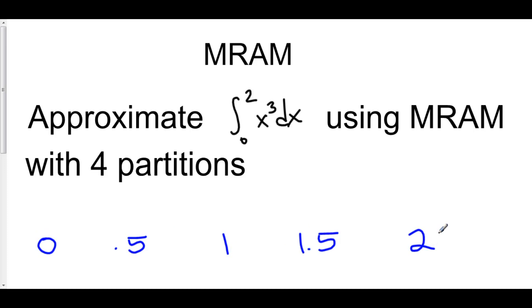Now we are using a mid Riemann approximation. So what that means is that the height of our rectangles is going to come from the midpoint between our two x values.